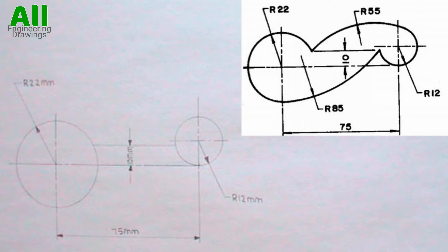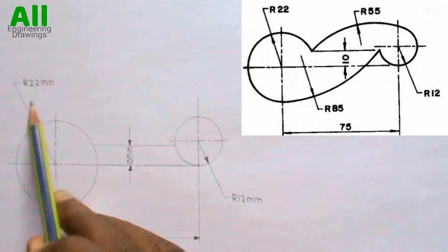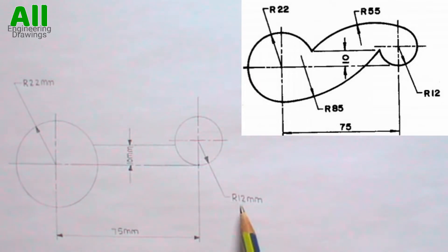In this video, I will be showing you how to draw the above tangency problem. To draw the above tangency problem, you have to first draw the layout this way. As you can see, the distance between this point and this point is 75mm. The radius of this circle is 22mm and the radius of this circle is 12mm. The distance between this line and this line is 10mm.